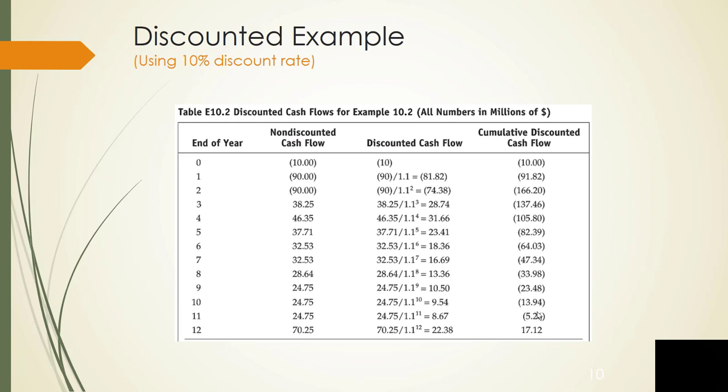This is the example out of the textbook. And we discussed this briefly in the last lesson, but now we need to discount each of these values. So the numbers end up being discounted by dividing at a 10% interest rate, 1.1 to the n power for whatever number of years it is. And we end up with these as our cumulative cash flow. So at the end, it looks like we have a net of 17.12 million dollars for our project.